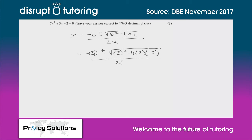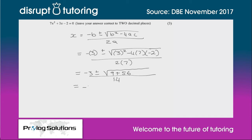We need to simplify that as far as we can. So we get -3 ± √(9 + ...). Then -4 × 7 = -28, and -28 × -2 is positive 56, all over 14.